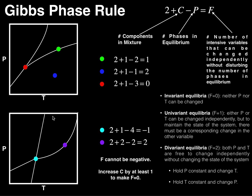Now for the purple point — now we know this phase diagram has two components. Applying the formula: 2 plus 2 components, minus how many phases are in equilibrium with the purple point. It's on one of these boundary lines, so there's one phase here and one here — two phases in equilibrium. 2 plus 2 minus 2 equals 2, so F equals two, divariant equilibrium. That's how you use Gibbs phase rule to determine F — just apply 2 plus C minus P equals F, calculate your F, and that's all there is to it.